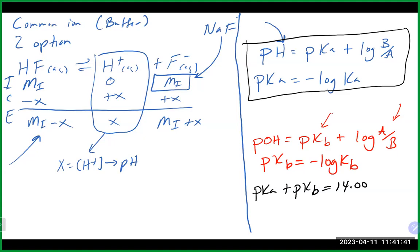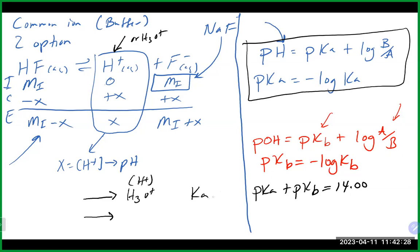Any questions on that? Ka means acid — it's for when you have H⁺ or H₃O⁺ on the product side. Kb is for base — when you produce OH⁻. We see this a lot with hydrolysis. It's really the product side that determines which one you should use. If you have H⁺ or H₃O⁺, use Ka. If you see OH⁻ on the product side, use Kb.